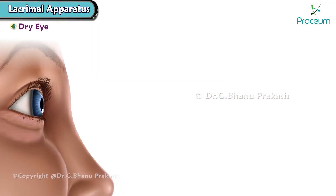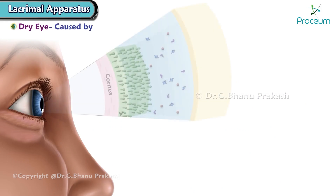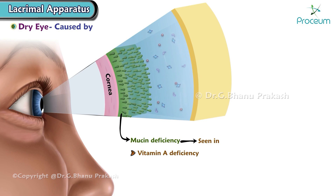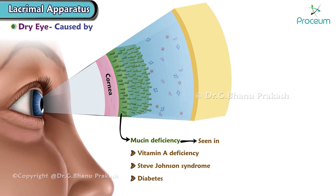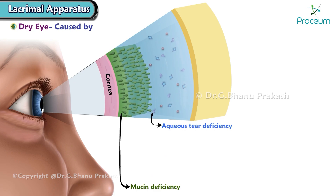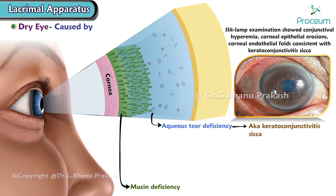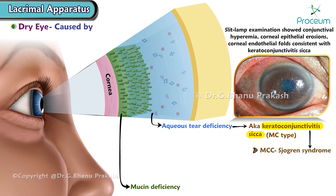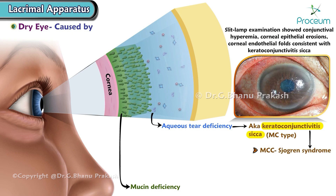Dry eye can be caused by: 1. Mucin deficiency, seen in vitamin A deficiency, Stevens-Johnson syndrome, and diabetes. 2. Aqueous tear deficiency, also known as keratoconjunctivitis sicca — the most common type. The most common cause of keratoconjunctivitis sicca is Sjögren's syndrome.